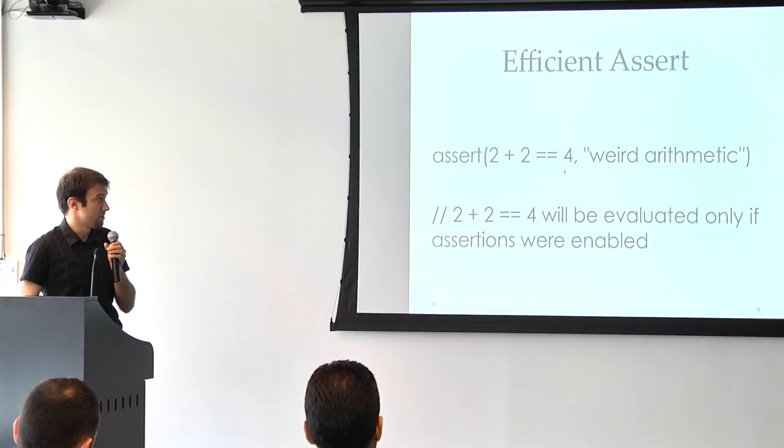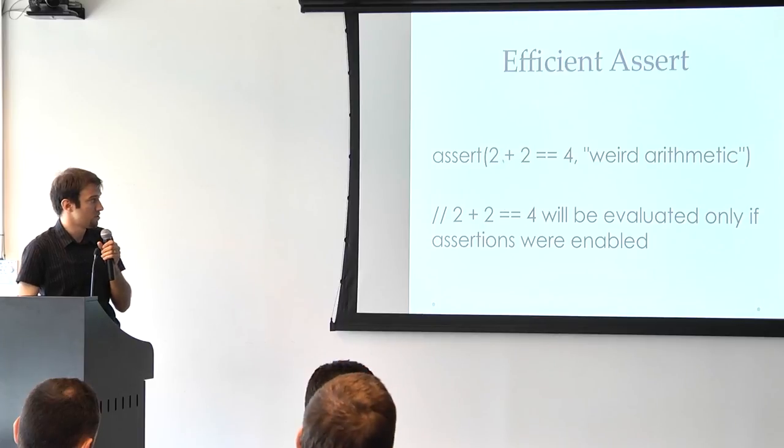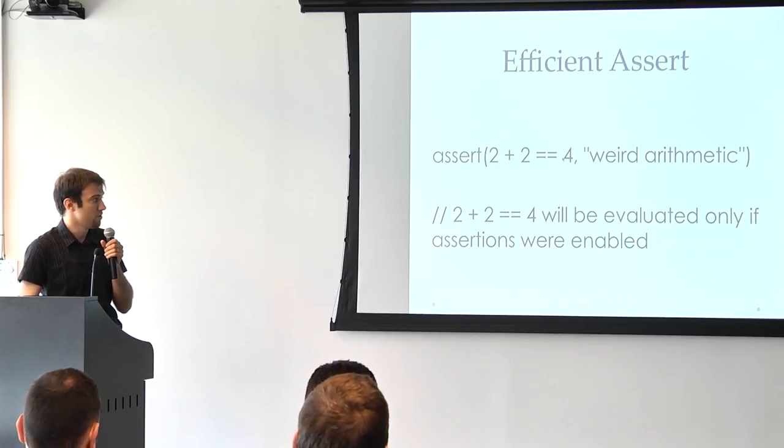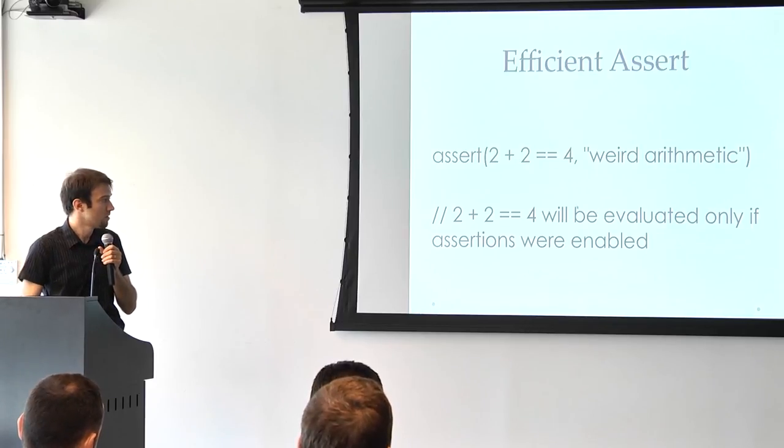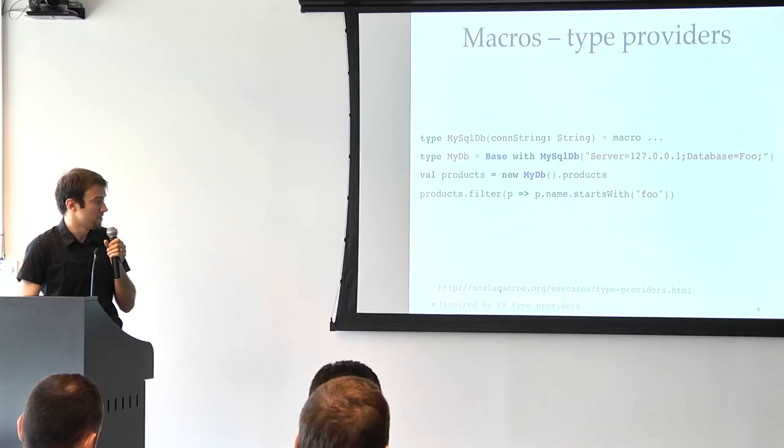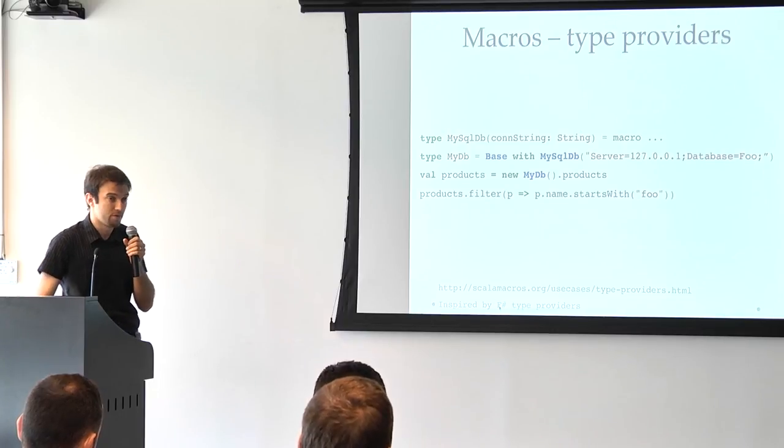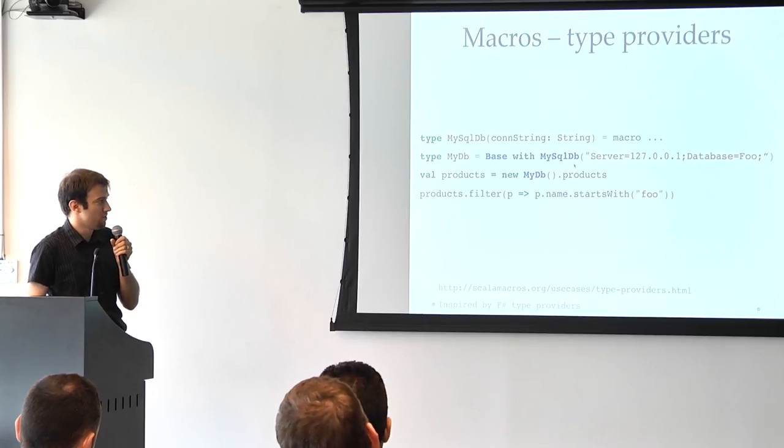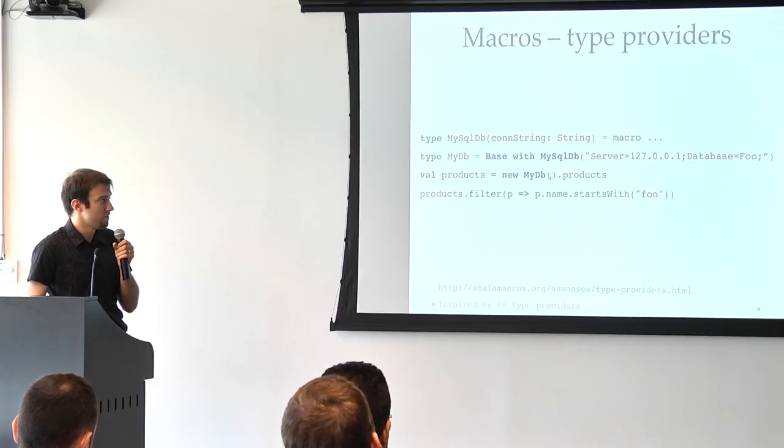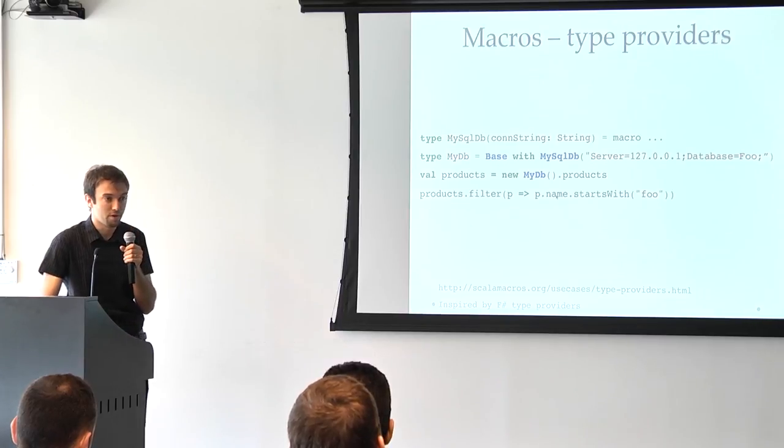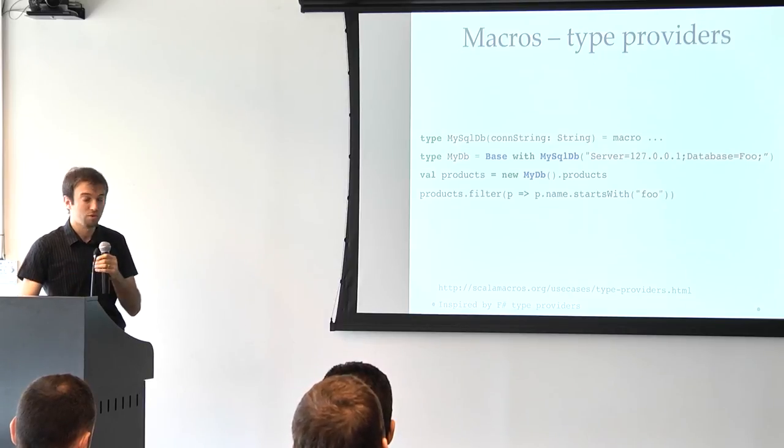Another example is an efficient assert. We do not want this computation to happen if the assertions are disabled. Another example is going to be type providers. This is actually available in F-Sharp as well. So in this case, what will happen is that this code will access the database during compile time. And if the database doesn't have the products table, it will not compile. And if the products table doesn't have the name, it will not compile. So think about what you can do with it.